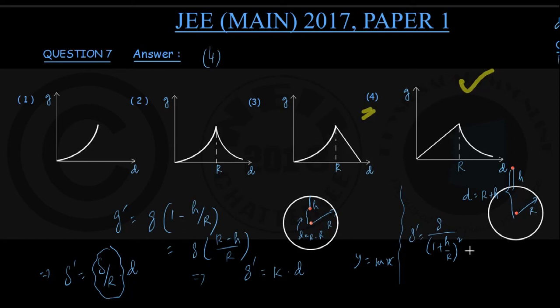Now this is giving me g r square by (r plus h) whole square, that is nothing but d square. So I am getting eventually that above the earth surface, g' is varying inversely as the square of distance. If g' is equal to g r square by d square, g being a constant, the value of free fall acceleration at surface, r is radius a constant, so g r square is a constant. g' varying inversely with the square of distance from the earth center above the earth surface.